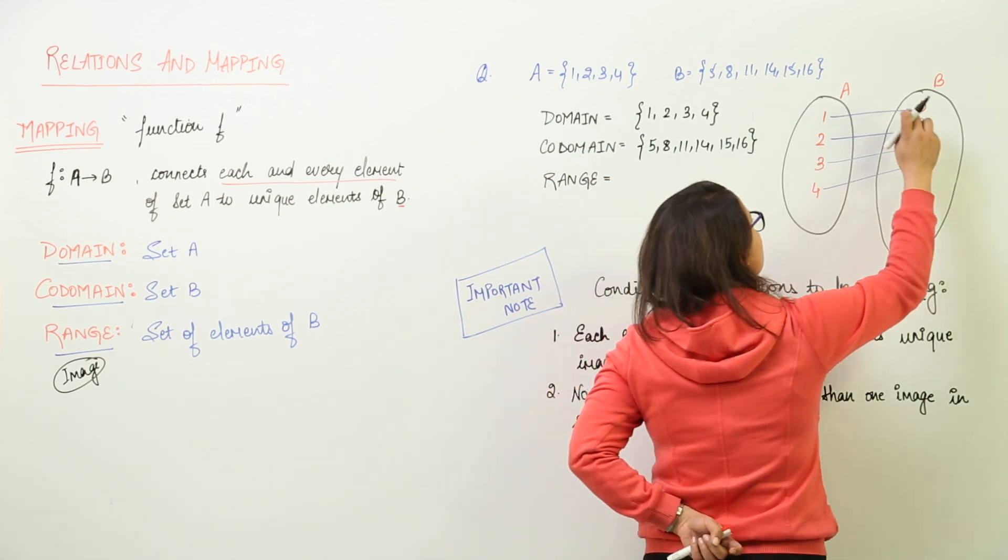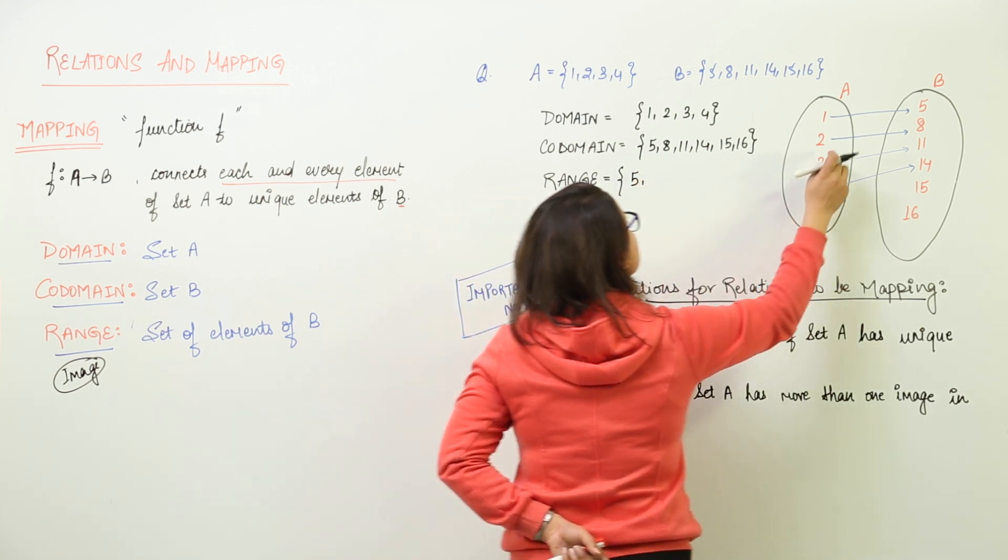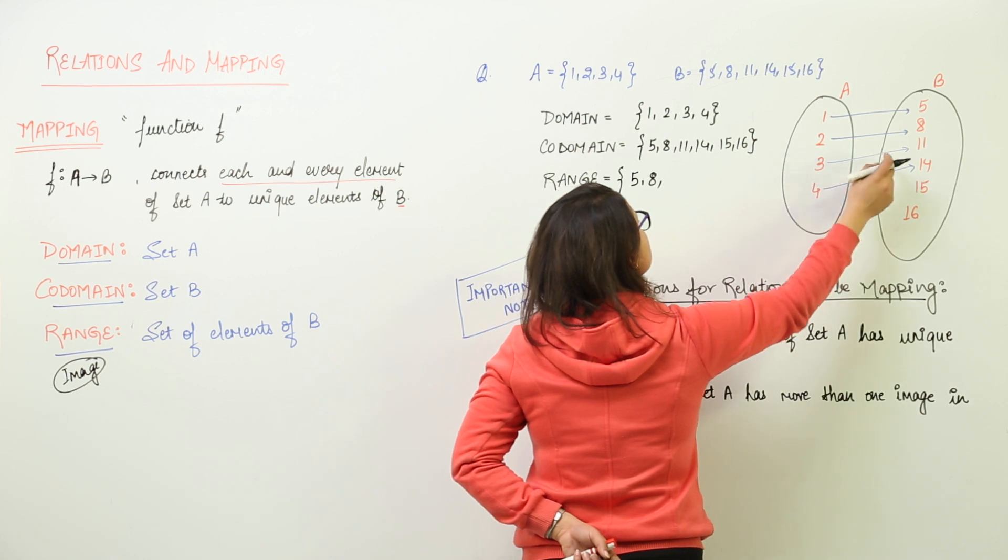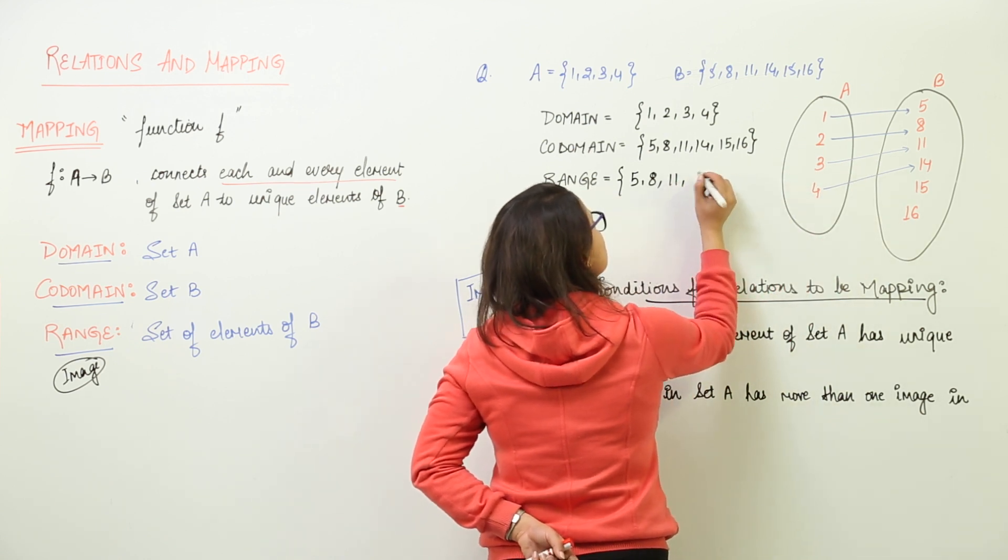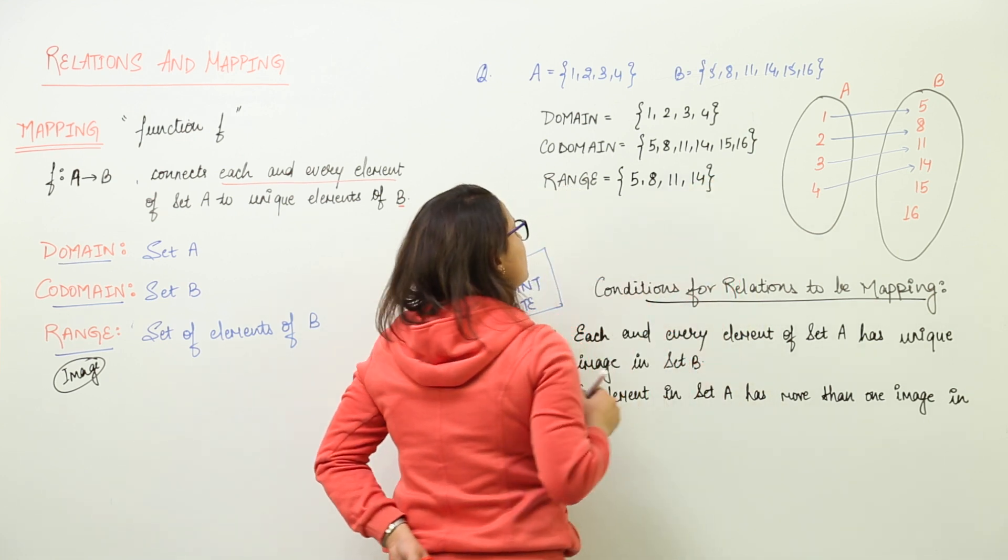Image of 1 in set B is 5, so we write 5. Image of 2 in set B is 8. Image of 3 in set B is 11. Image of 4 in set B is 14. So, that forms the range.